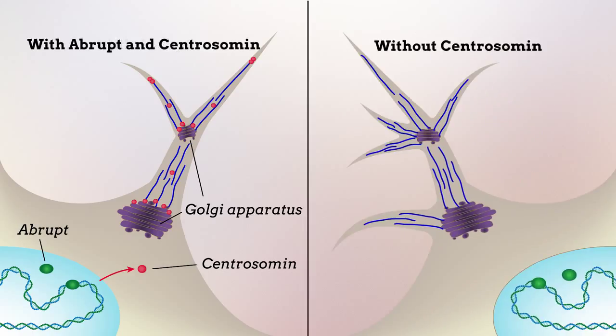However, eliminating centrosomin function prevented abrupt from restricting dendritic branching, leading to excessive dendrite formation. This occurred because without centrosomin, microtubules were free to push out in any direction, thereby forming new dendrites.